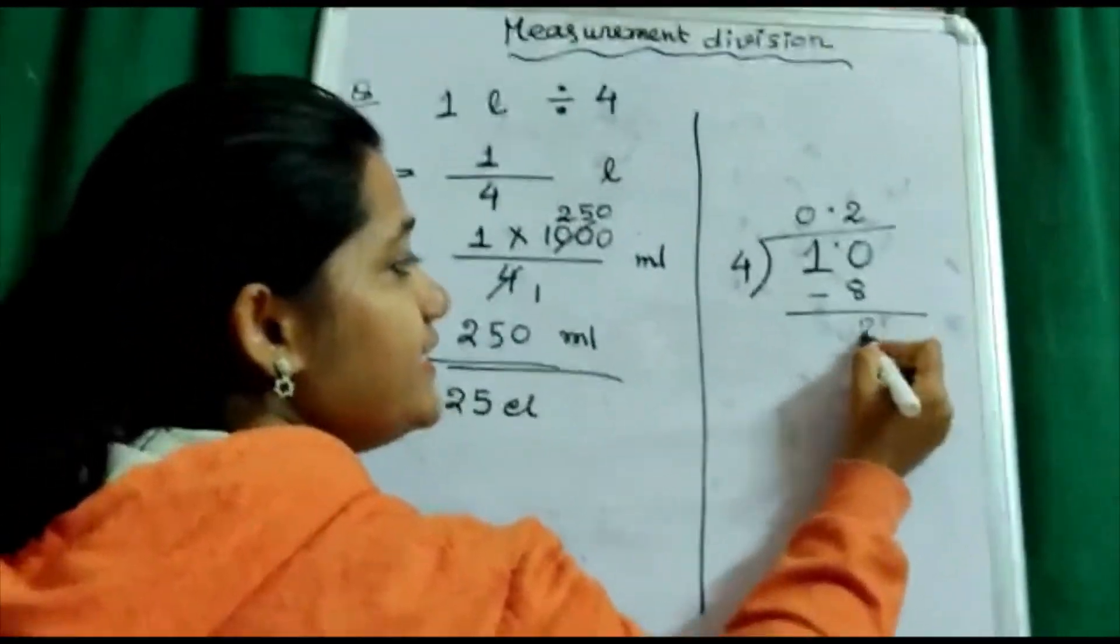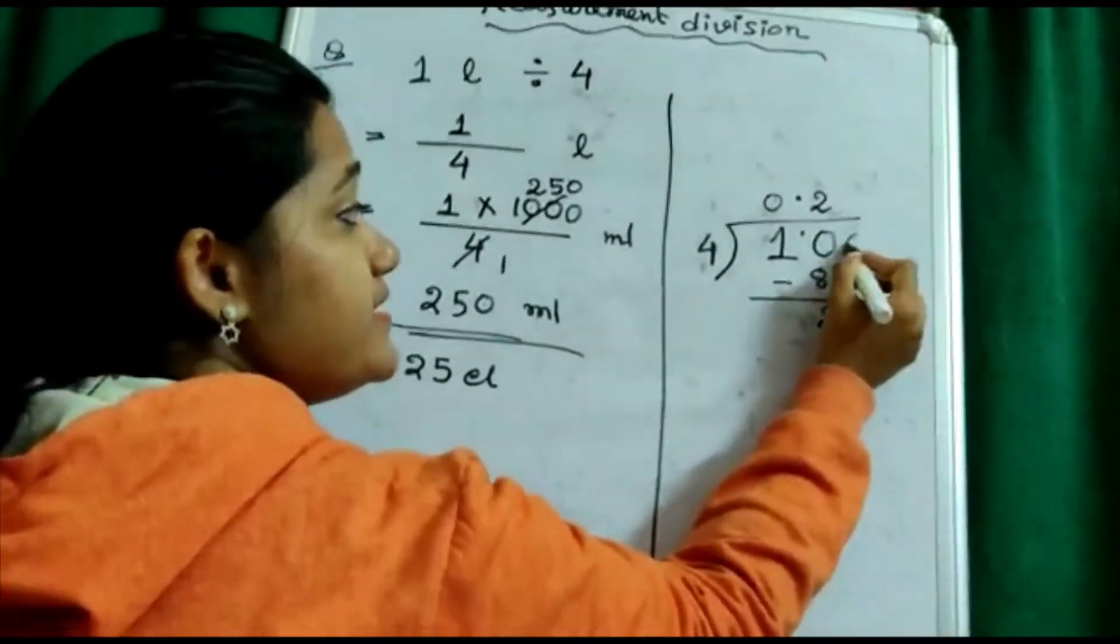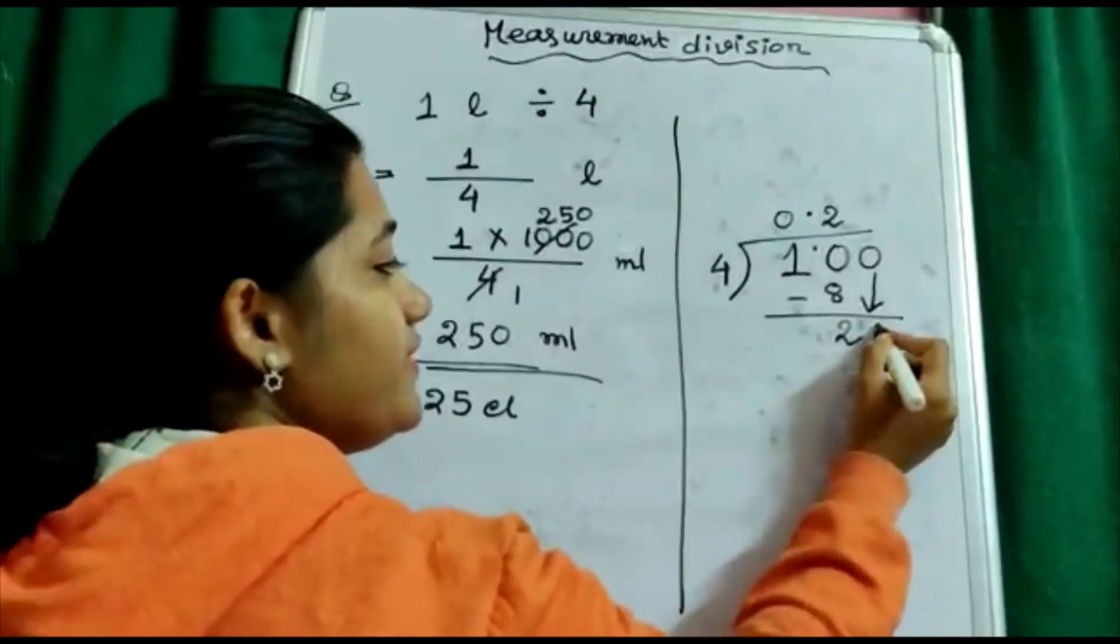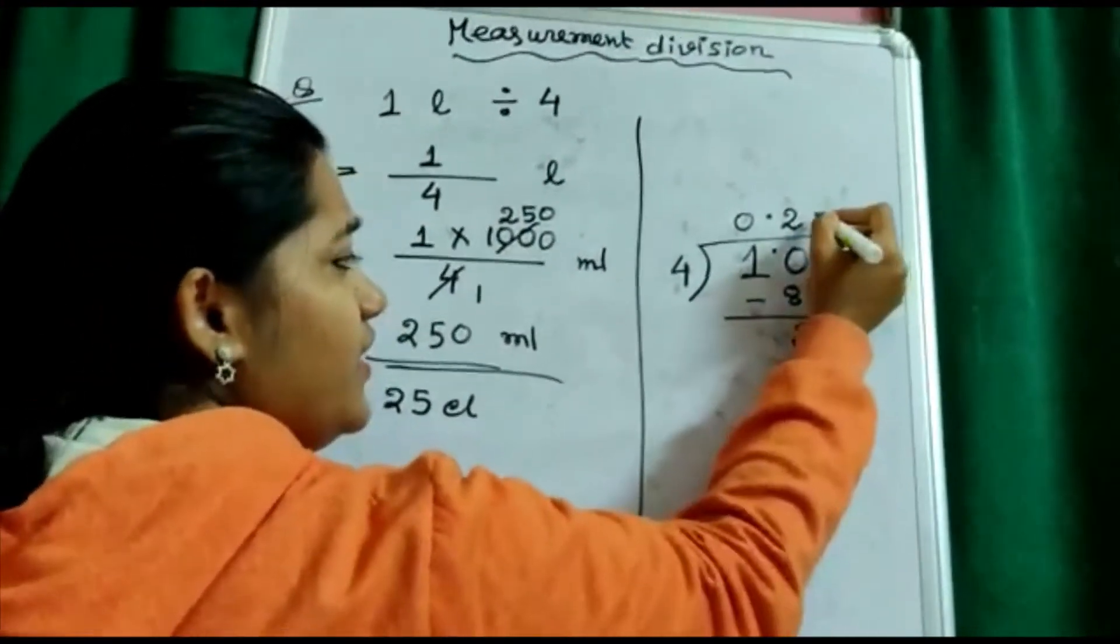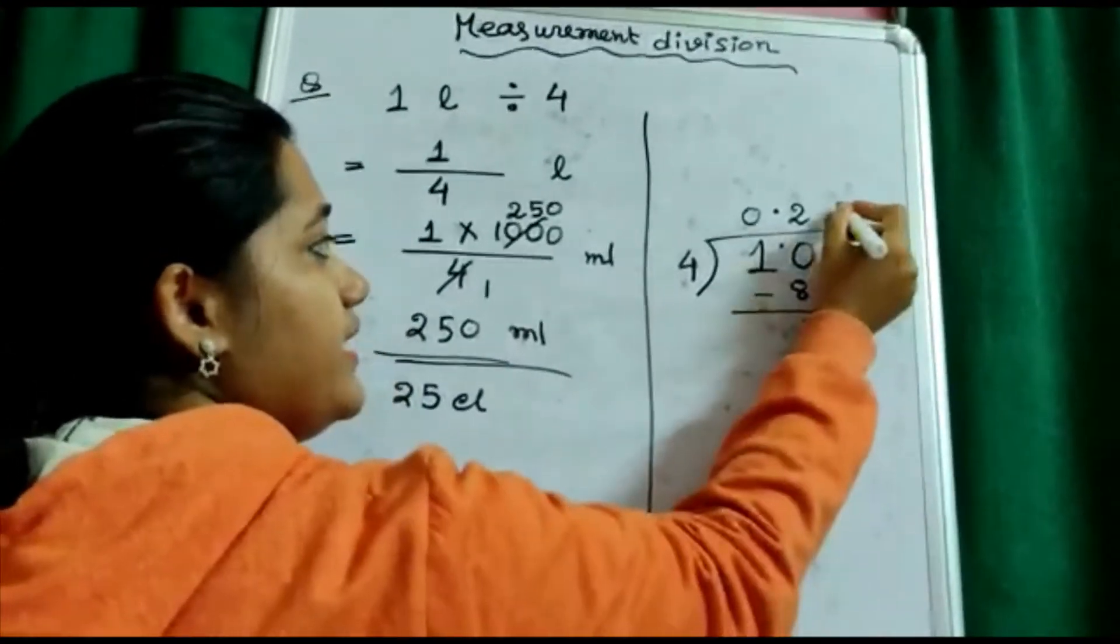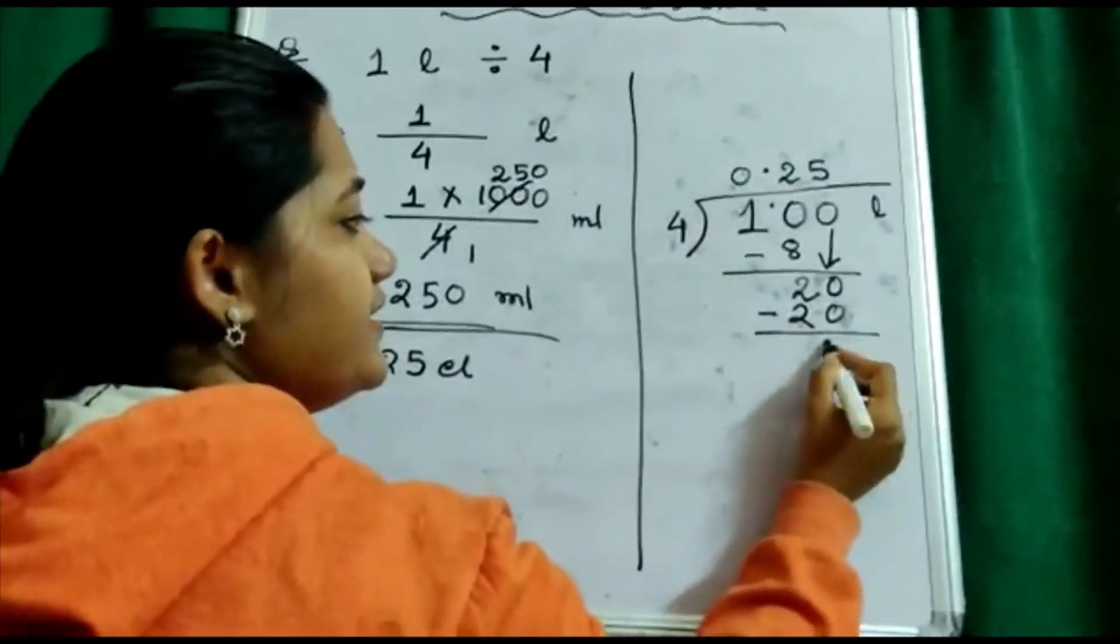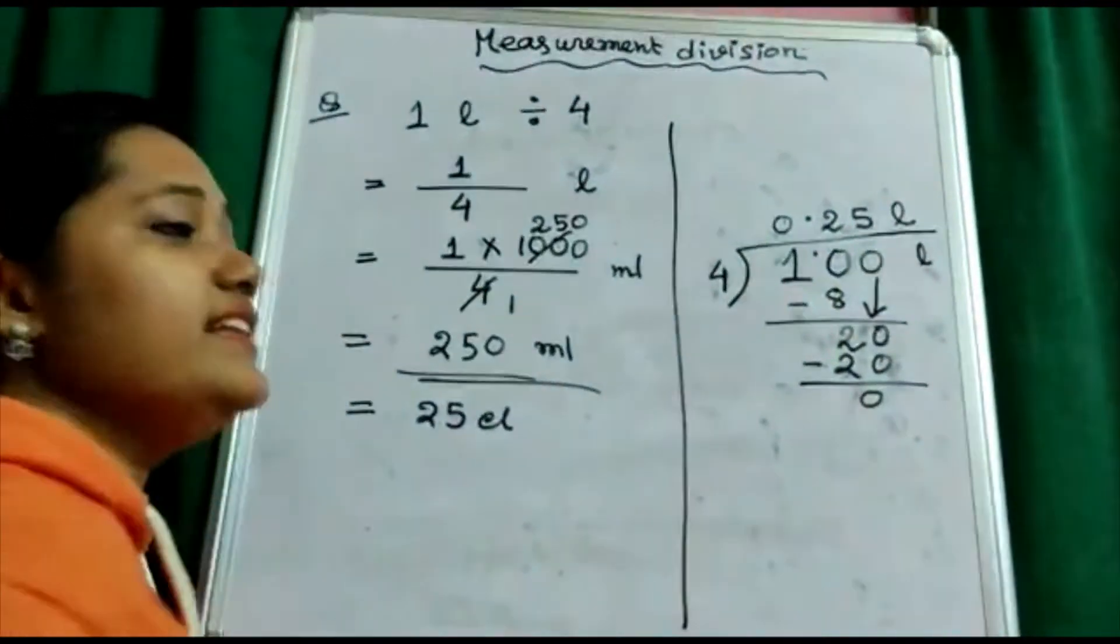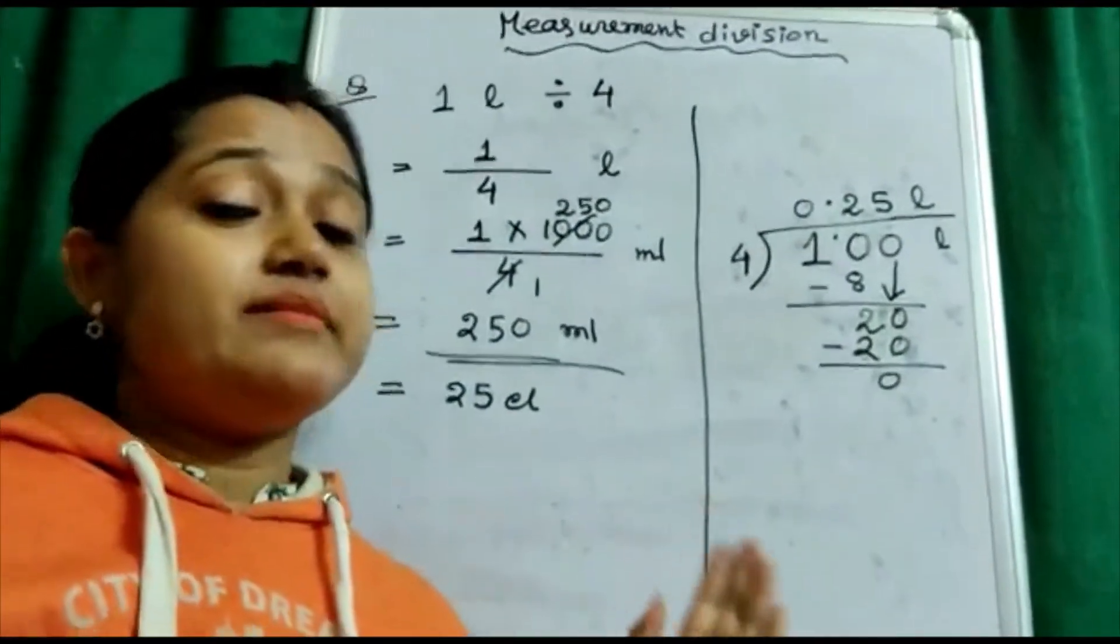I have counted as two. Then one point zero can be written as one point zero zero. This zero, then this zero, then this zero is coming down. That is 20. Four fives are 20. So 0.25 liter.